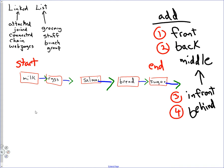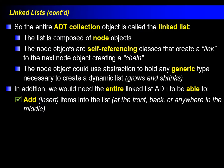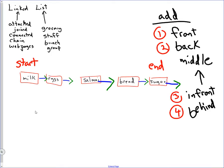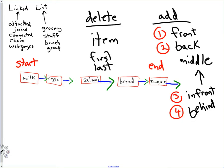Now salami's in there. What else would we need to do with our list other than just add? Remove. You got it — delete it, whatever word we want to use. So if I want to delete something, is just saying delete enough? You need to know the item. If I said delete salami, would that be enough information? What if salami is in the list twice? Do you delete the first one, the last one, or all of them?